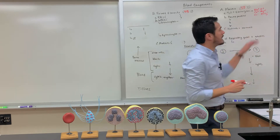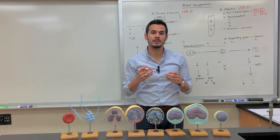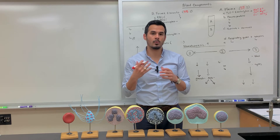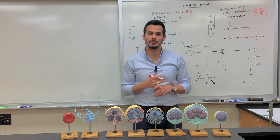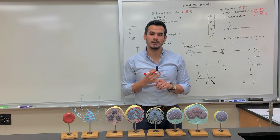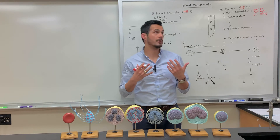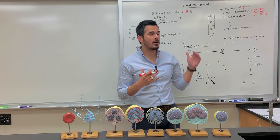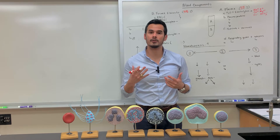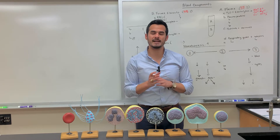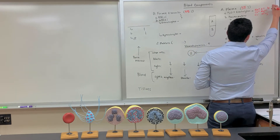These electrolytes help to compartmentalize the fluid — the water — inside the cell and outside of the cells. One example is the concentration gradient that differs within neurons. Bicarbonate functions as a buffer within the blood to pick up any excess acid or excess protons found within the blood.